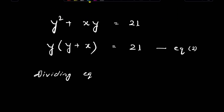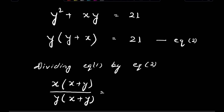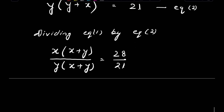Now dividing equation 1 by equation 2, we can write x(x + y) divided by y(y + x) is equal to 28 upon 21. Since (x + y) and (y + x) are like factors, we can cancel them out. So x upon y is equal to 28 upon 21.